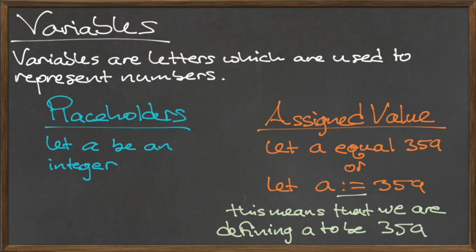To translate the sentence 'let a equal 359,' we use the colon-equals operator seen here to indicate that we are defining the variable a to take on the value of 359.